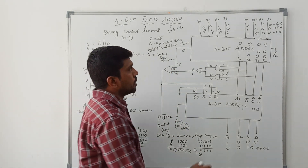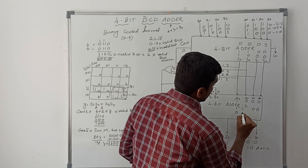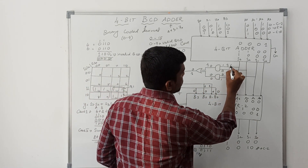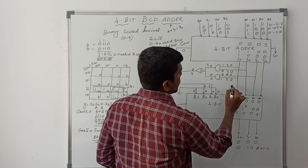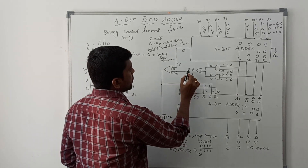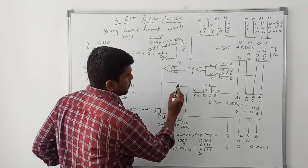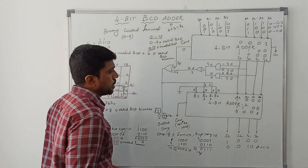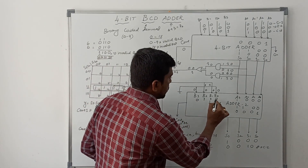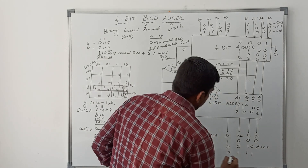Carry-out=1 connects to the logic diagram. Sum 0001 connects to A0–A3 of the second adder. The AND gate inputs from the K-map logic are 0, so AND gate output is 0. OR gate: 0+1=1, so B2=1 and B1=1, B0=0, forming 0110. Adding 0001 + 0110 gives result 0111 with carry 1, representing 17. This confirms Case 3 works correctly.